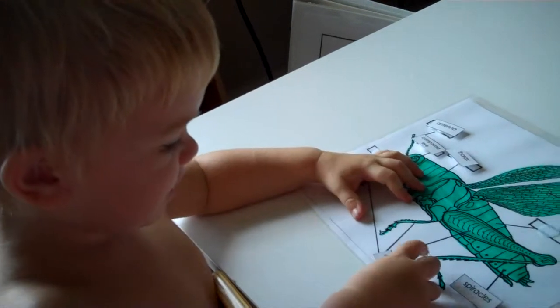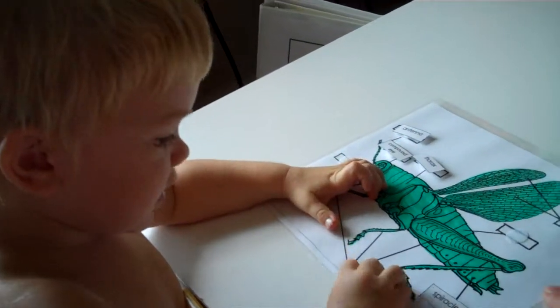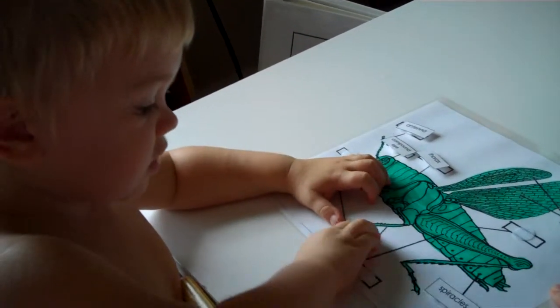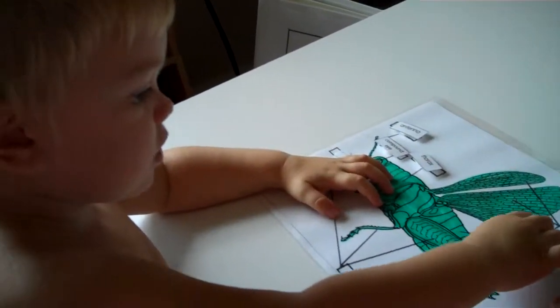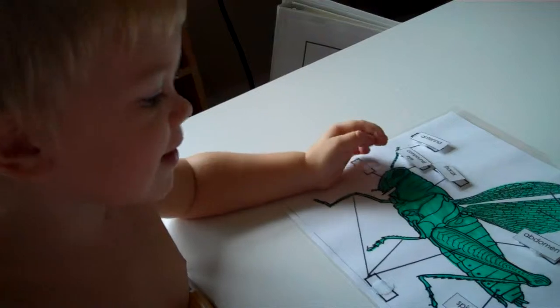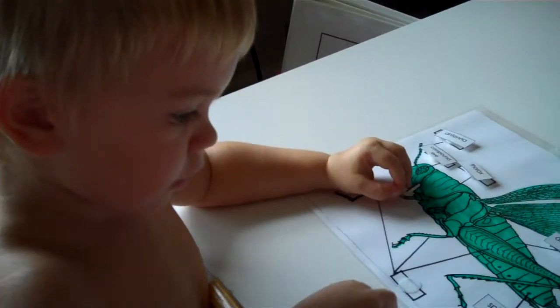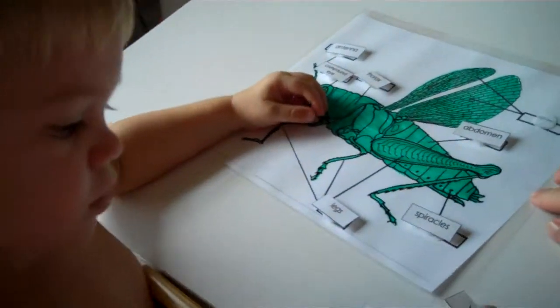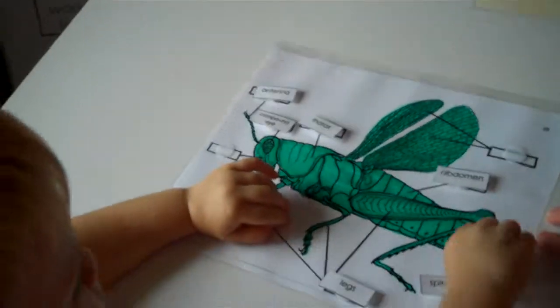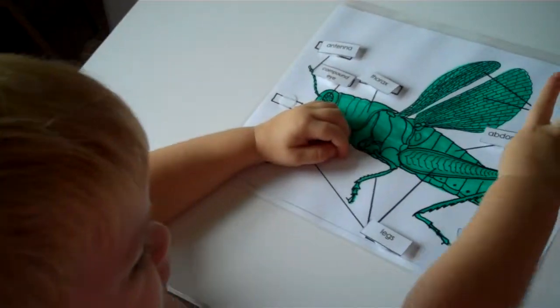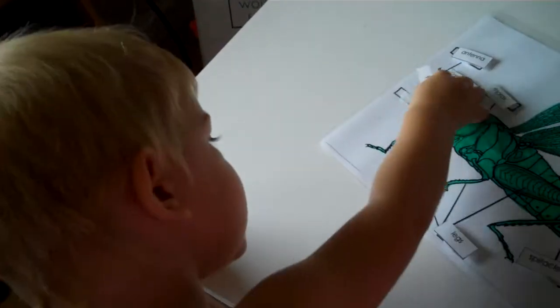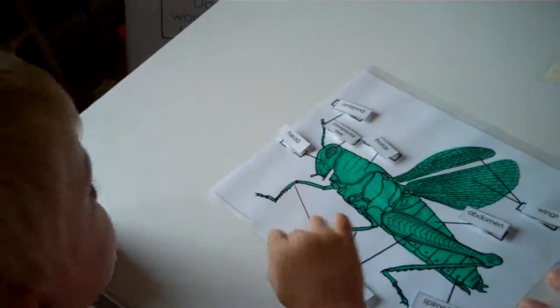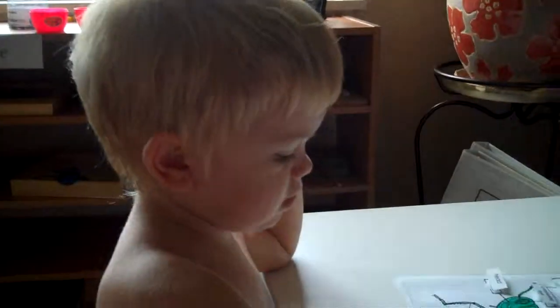But the legs. These are legs. And they go around. We found an abdomen. So we put legs. Wings. Wings. And head. And head. Thank you.